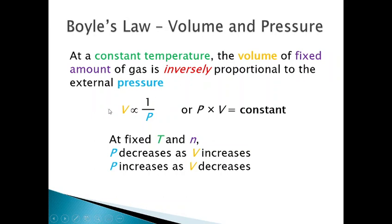If you increase the pressure, your volume is going to go down. That proportionality symbol — it kind of looks like an alpha mixed with a fish — just means 'proportional to.' All Boyle is really telling you is there is an inverse relationship between volume and pressure. If you rewrite this and isolate pressure and volume on one side, you get pressure times volume equals some constant.